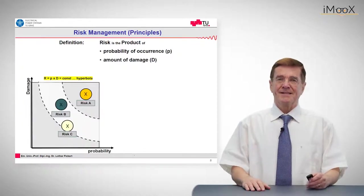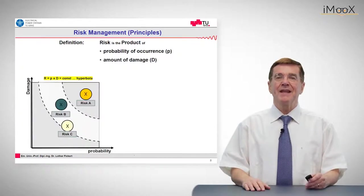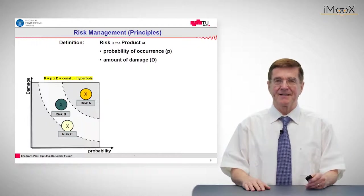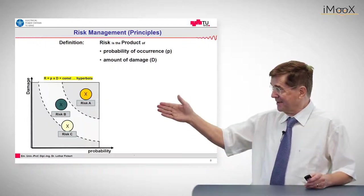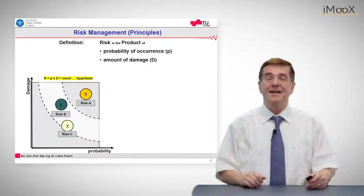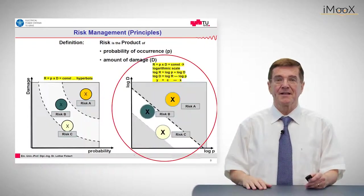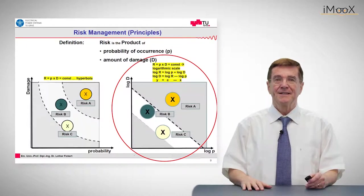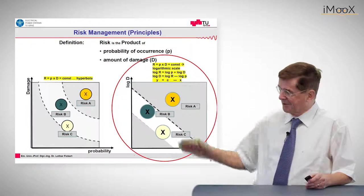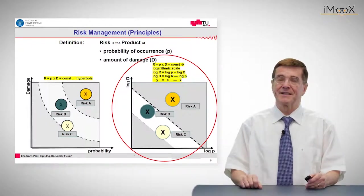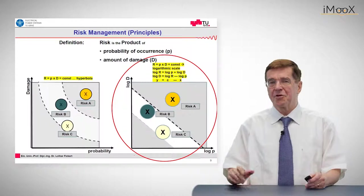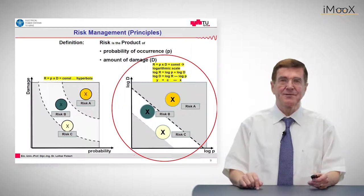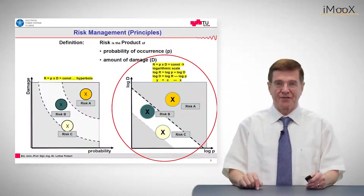Since this is a product, curves of equal risk are represented in a linear scale as you see to my right side as hyperbolas. If you take a logarithmic scale, a hyperbola turns into a straight line. The high risk area is in the top right corner and the low risk area, which is desirable, is in the low left corner.